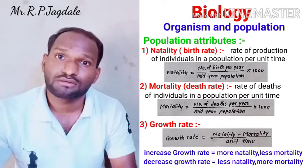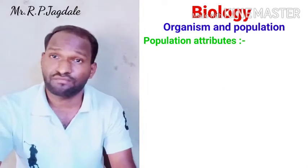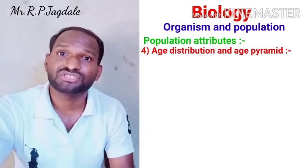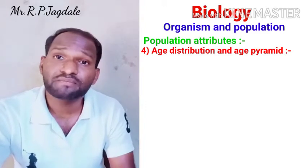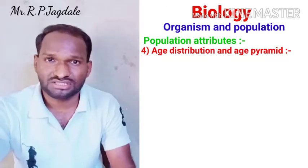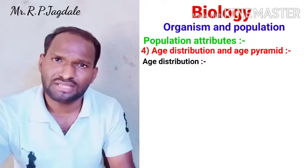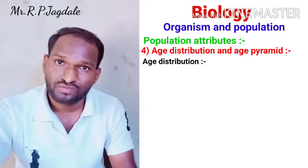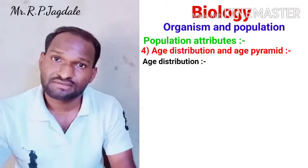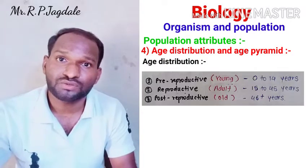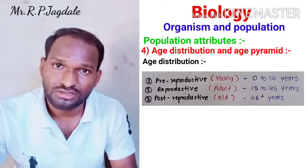So these are three attributes: natality, mortality, and growth rate. Now we are going to see the fourth attribute, which is a very important one — age distribution. In the case of human beings, we know that human beings have three life stages: the young stage, adult stage, and old stage. The distribution of age gives us three stages: pre-reproductive stage, reproductive stage, and post-reproductive stage.